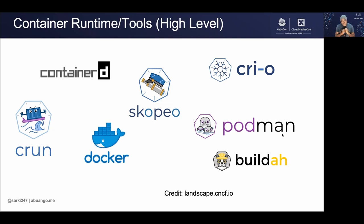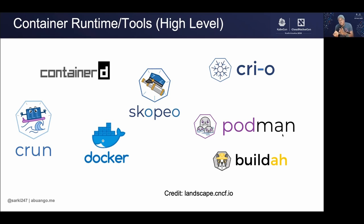CRI-O is an implementation of the Kubernetes container runtime interface, which enables any OCI-compatible runtime to work with Kubernetes. Previously Kubernetes was tightly coupled to Docker, but with the container runtime interface, you can choose which runtime to use. You can use runc, GVisor, or something else in the background. CRI-O allows you to be able to use different runtimes with your Kubernetes cluster.